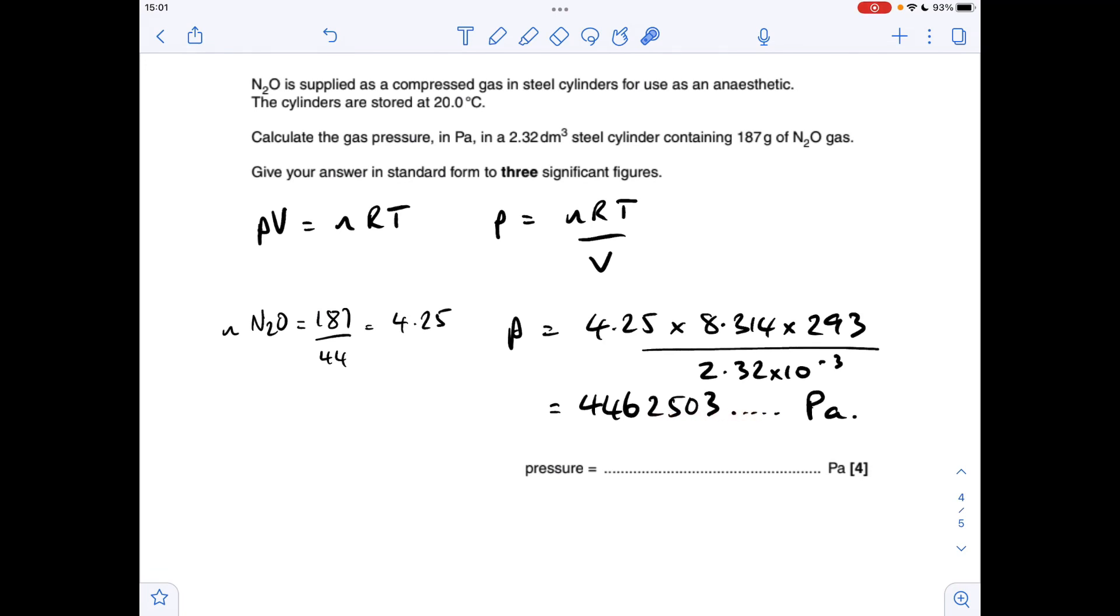Remember that the volume for the ideal gas equation is in pascals, so we're in the right units for the final answer. All we've got to do is put this in a standard form to three significant figures, which is 4.46 times 10 to the 6.